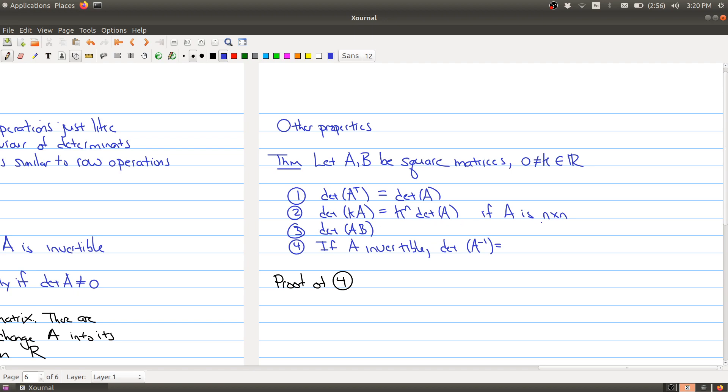For example, if A was a 10 by 10 matrix and k was 3, you would have 3 to the 10 times the determinant. What's the determinant of the products? This is a very nice fact: the determinant of the products of two matrices is just the product of the determinants, which is a nice result.